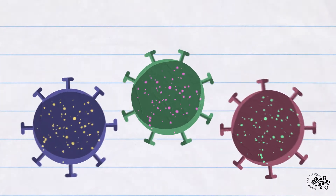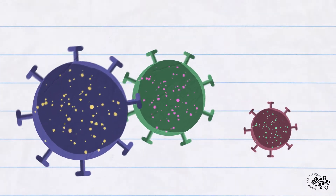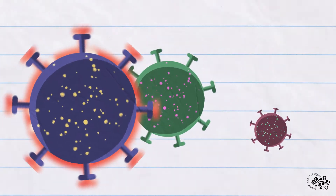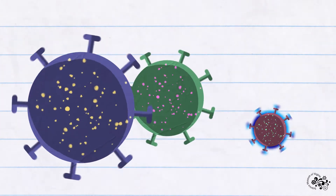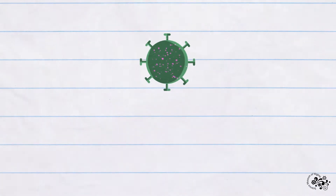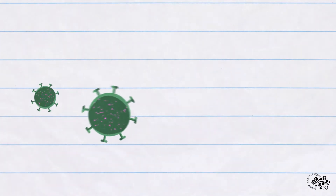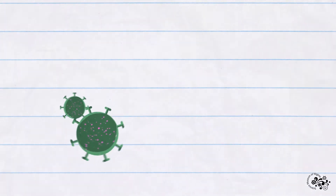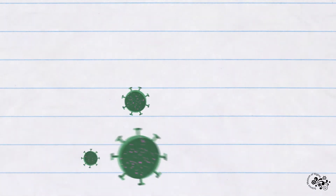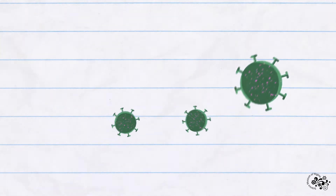The concept of how viruses mutate and why some mutations matter and others don't is complex. Viruses are constantly making copies of themselves, and sometimes in that process, they make a small change that may or may not matter.